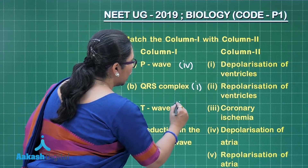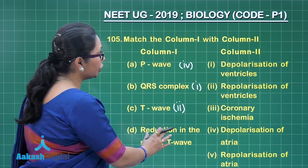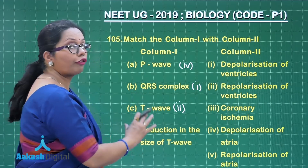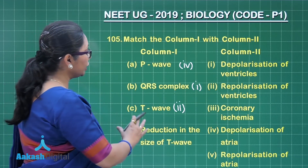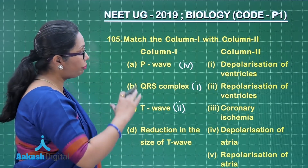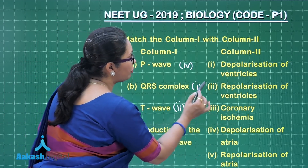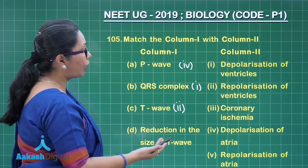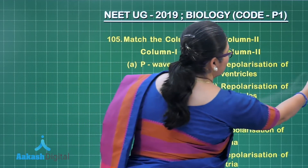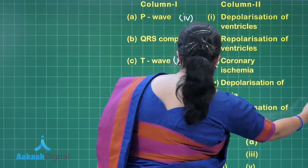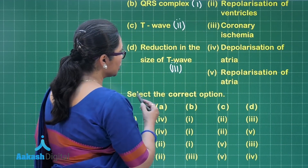The T wave represents repolarization of the ventricles, corresponding to choice 2. A reduction in the size of the T wave is seen on ECG when a person is suffering from myocardial ischemia — where the myocardium receives insufficient oxygen — causing flattening of the T wave and depression of the ST segment. Coronary ischemia is the same as myocardial ischemia, so this matches with choice 3.